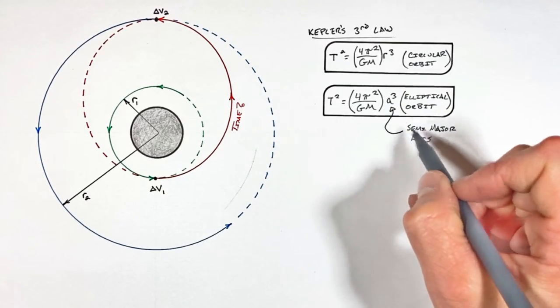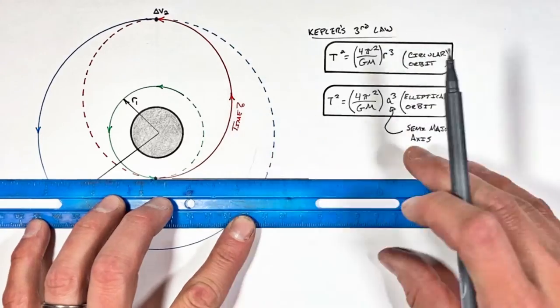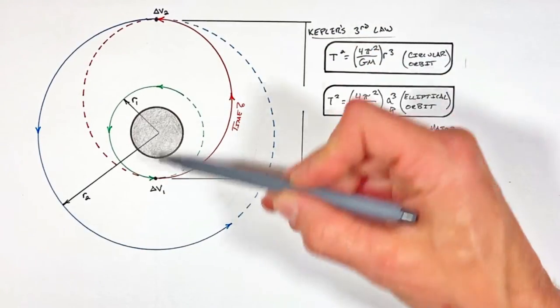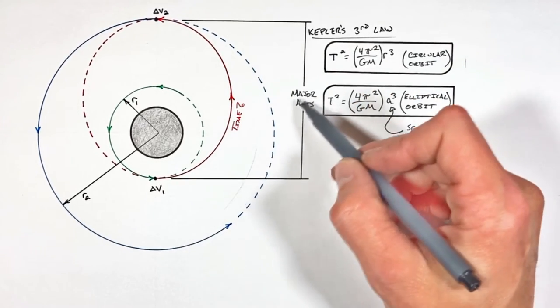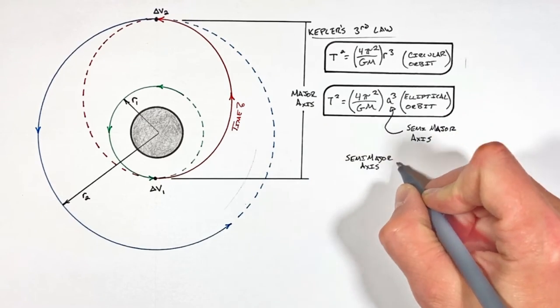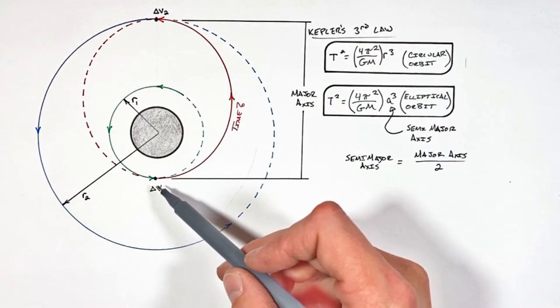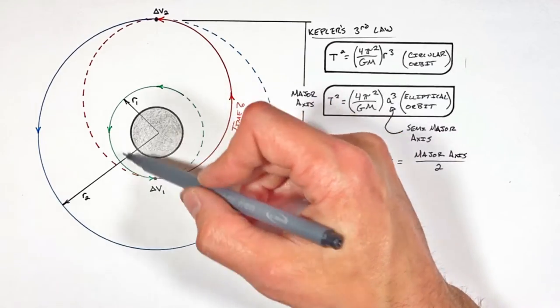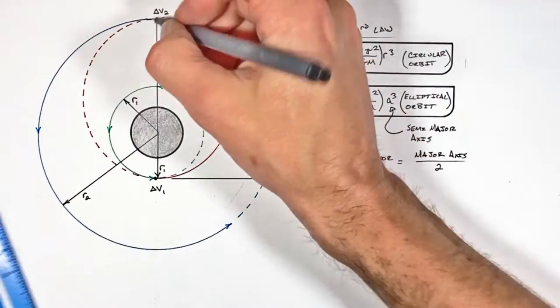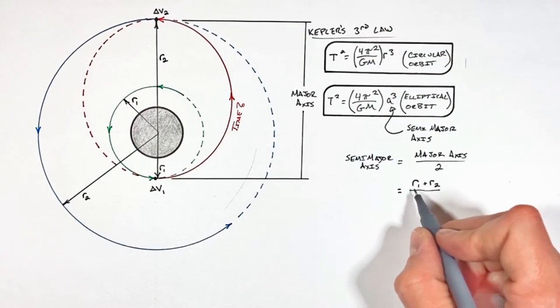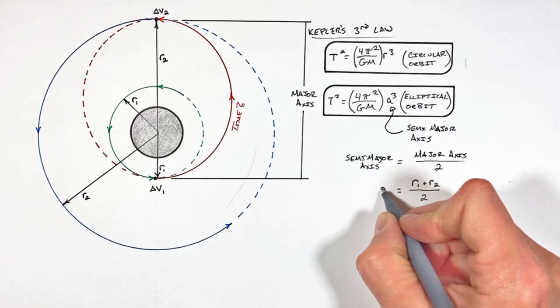Now the semi-major axis of an ellipse is half the distance along this long axis of the ellipse. See the distance from here to here is what we call the major axis. Now the semi-major axis is simply half of the major axis. And the important thing to recognize for this ellipse which is traced out by the Hohmann transfer is that the major axis is actually the radius of our inner orbit plus the radius of the outer orbit.